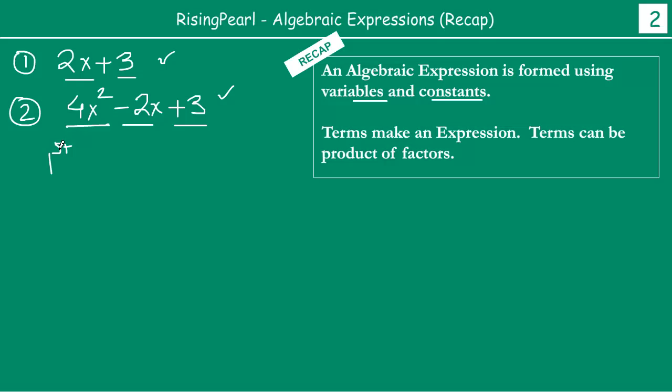Let's write this. The first term is 4x squared. The second term is minus 2x. The first term is 4x squared, the second term is minus 2x, and the third term is plus 3. So we see that these terms actually make the expression. These terms are actually product of factors.